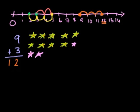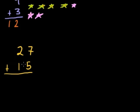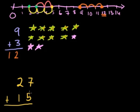What happens when you start adding two-digit numbers? For example, if I were to add 27 plus 15 — if you had a lot of time you could draw out 27 circles and then 15 more circles and count them. Or you could draw a number line that went all the way to whatever 27 plus 15 is. But that would take forever. So I'm going to show you a way to do this type of problem where you really just have to know your addition for relatively small numbers.